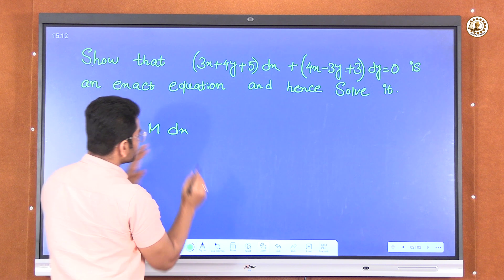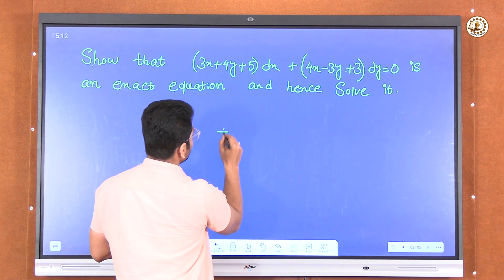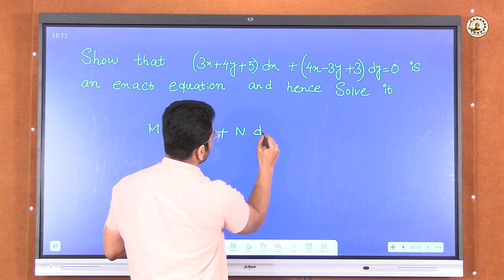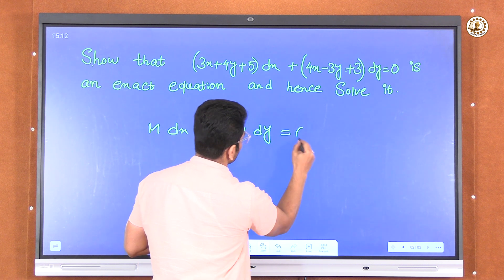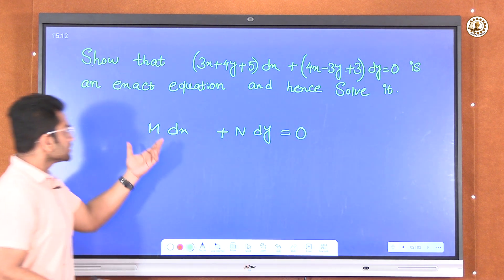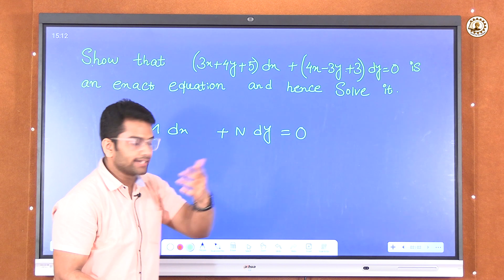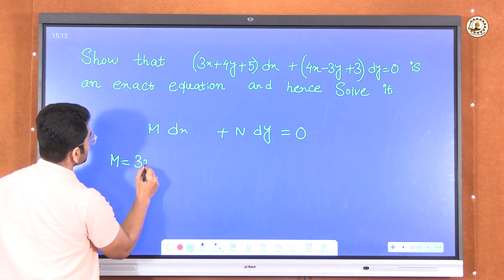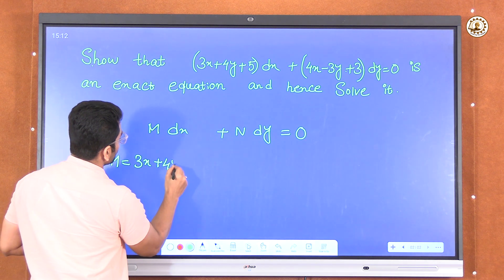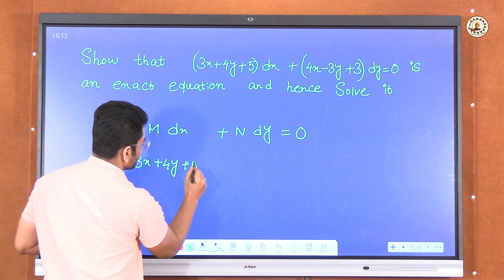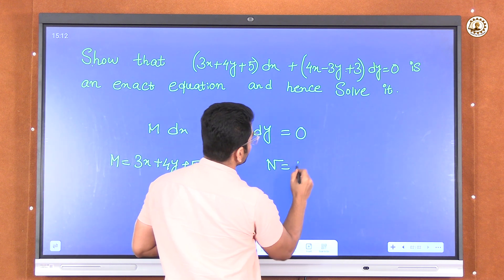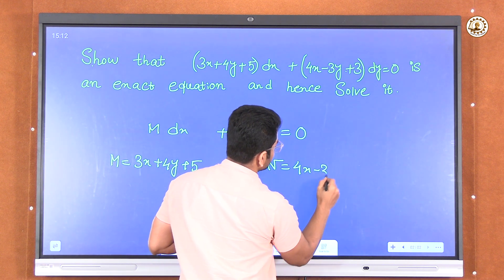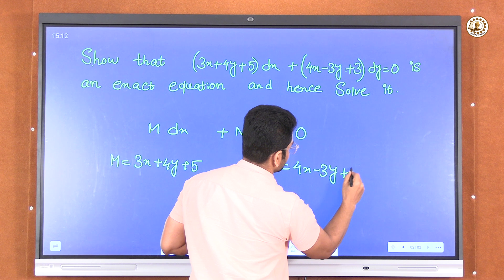We know that the form of the differential equation is M dx plus N dy equals 0. If I compare this form with this equation, I will get M is equivalent to 3x plus 4y plus 5, and N is equivalent to 4x minus 3y plus 3.